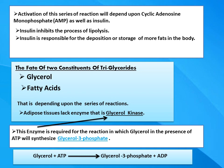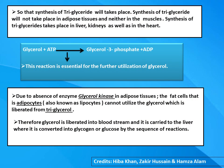Now the fate of the two constituents of triglyceride — one is glycerol, another one is fatty acid — depends upon a series of reactions. As I told you in a previous lecture, the adipose tissues lack the enzyme glycerol kinase, which is required for the reaction in which glycerol in the presence of ATP synthesizes glycerol-3-phosphate, so that synthesis of triglyceride will take place. This synthesis is not occurring in adipose tissue or muscles, but it can take place in the liver, kidney, and heart.